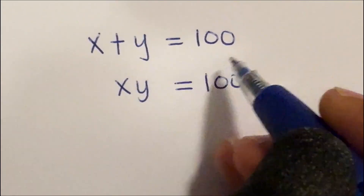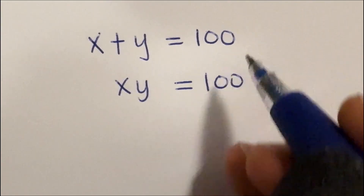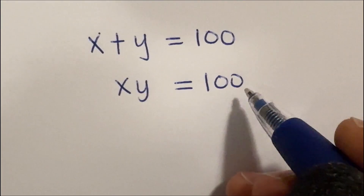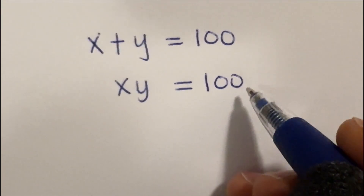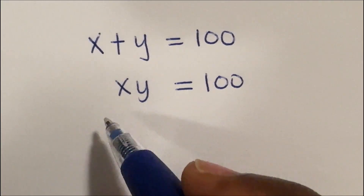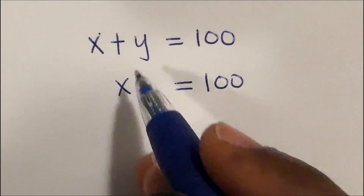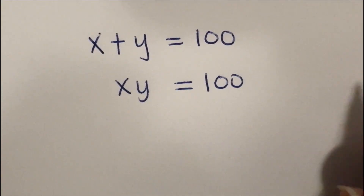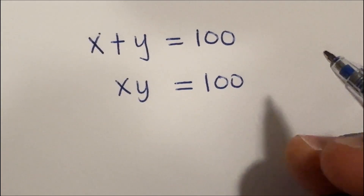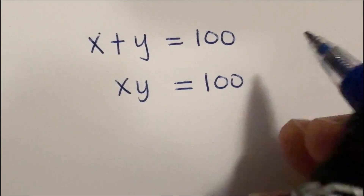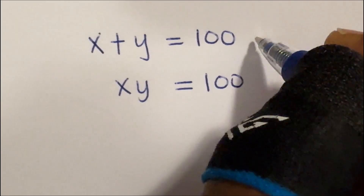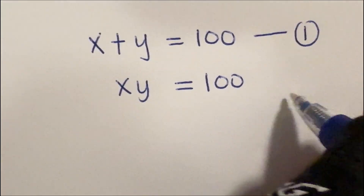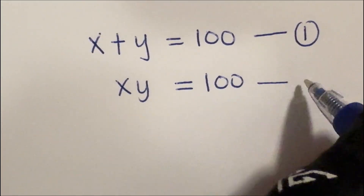x plus y is 100, and xy is equal to 100 as well. We have to find all values of x and y. This is a simultaneous equation — let us call this equation 1 and call this equation 2.